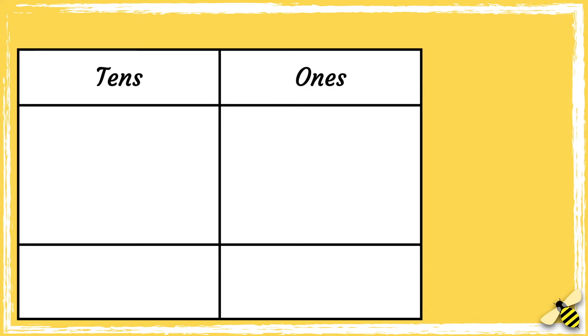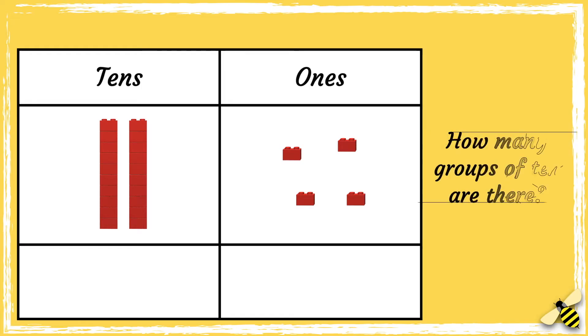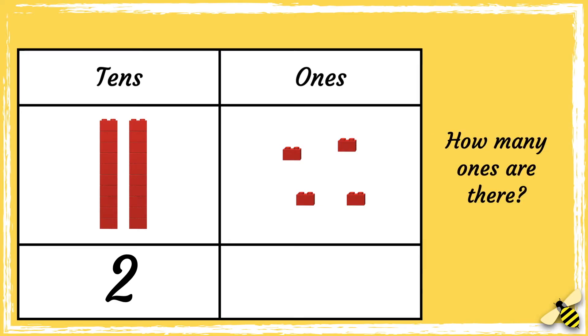Let's look at another number. What number is shown on the grid? How many groups of ten are there? There are two groups of ten. Now let's see how many ones there are. There are four ones. So the number is 24.